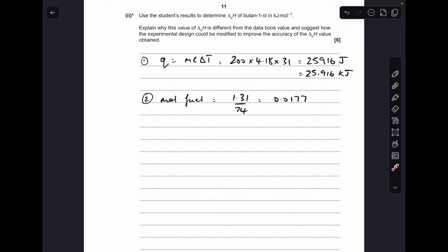Next thing we do is work out the moles of fuel that's been burned. So the mass of fuel burned was that, divided by its MR 74, equals 0.0177. And then the enthalpy change of combustion is the kilojoules divided by the moles, 1464 numerical value. Don't forget the minus sign because it's an exothermic reaction.